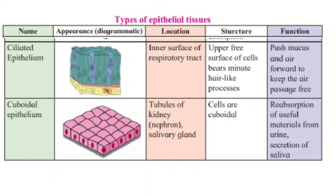Next is cuboidal epithelium — the name itself tells you the structure is like cubes. Its location is in the tubules of the kidney (nephrons) and in the salivary glands. The structure, as the name indicates, consists of cuboidal cells. Its function is reabsorption of useful materials from urine and secretion of saliva. In the excretory system, these cells help in reabsorbing the useful materials in the nephrons.